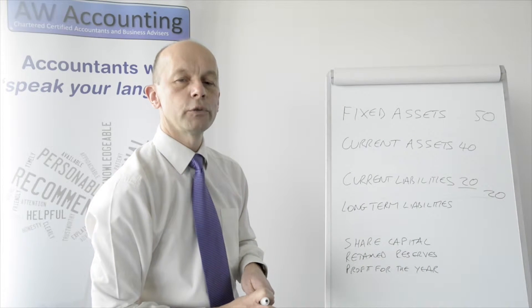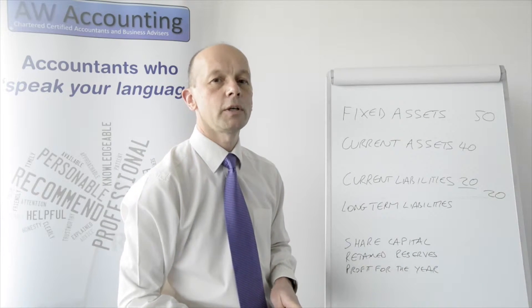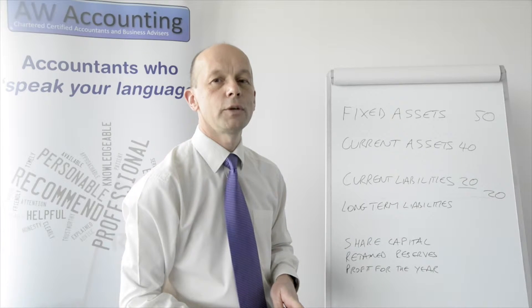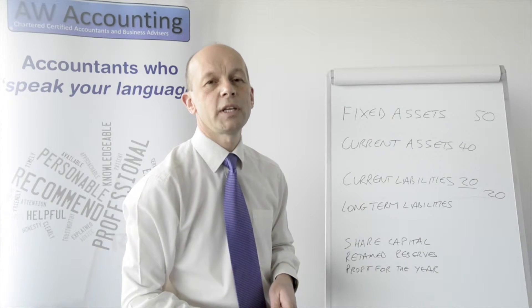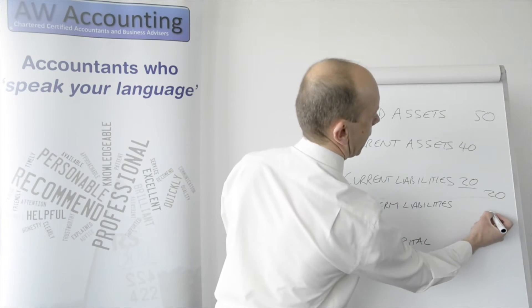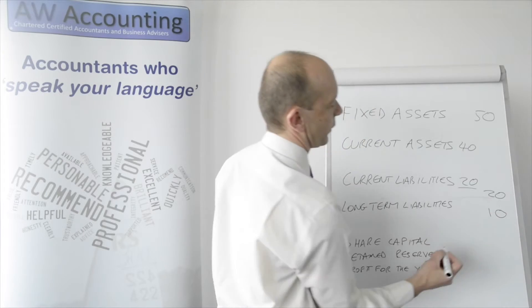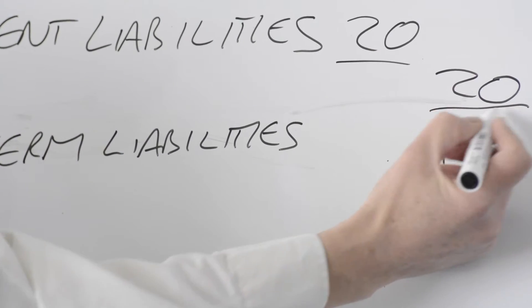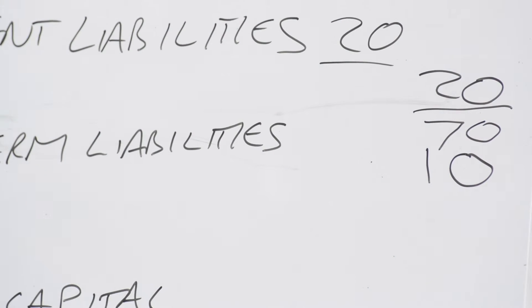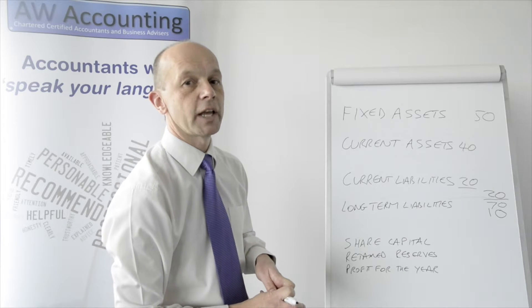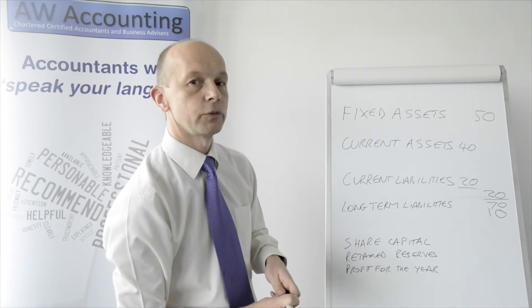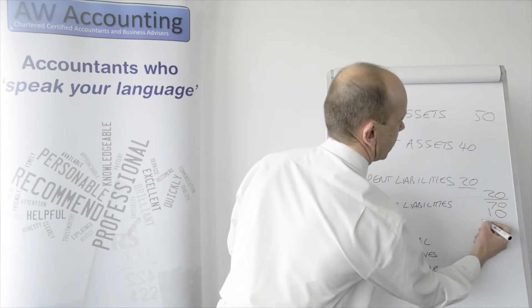Then we move on to long-term liabilities. These are things that aren't payable immediately — so bank loans perhaps over five years, where one year is current and the remaining four aren't. In our case we bought some plant within our fixed assets for £50,000, payable with a loan over a number of years, and we've got £10,000 left. So we've got total fixed assets and current assets of £70,000, less long-term liabilities of £10,000, leaving us with £60,000.